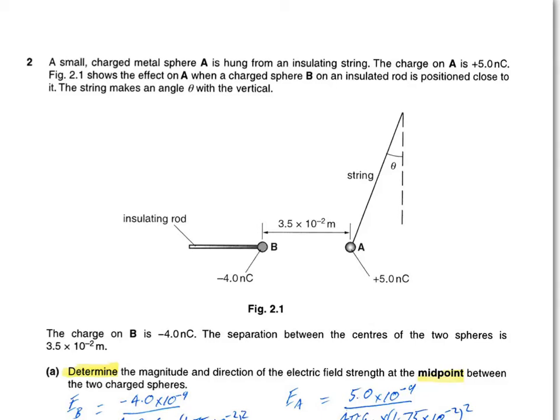So this is G485 homework book question 2. We've got these two small metal spheres hanging from a string. B's held on a rod. We've got different charges on either of them and a separation between their centres. So what's the first question?